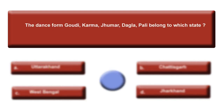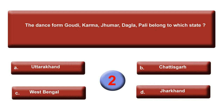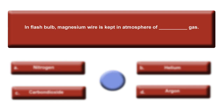This question is related to dance forms of different states of India. The dance forms Gaudi, Karma, Jumar, Dagla and Pali belong to which state? Option A: Uttarakhand. Option B: Chhattisgarh. Option C: West Bengal. Option D: Jharkhand. Your time is up. The right answer is B, Chhattisgarh.